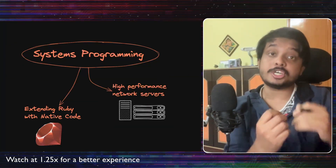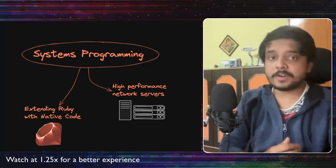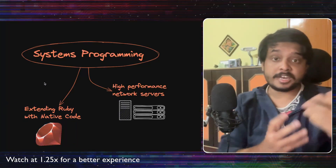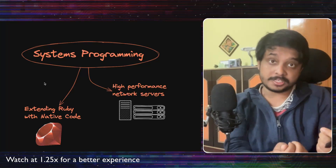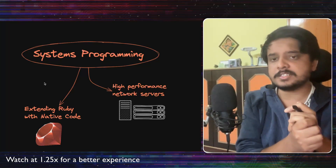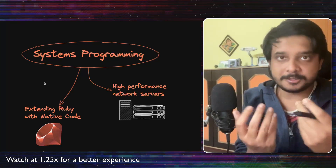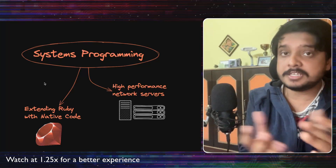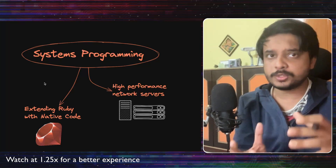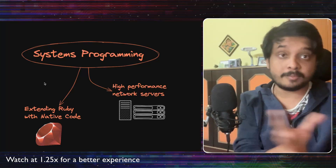The term systems programming generally means much lower level programming with high performance native code. For Shopify, they wanted to make things like network servers and extending Ruby with native code. For these purposes they historically used Go and C, but they are choosing Rust now. It is important to mention that their main backend language is still Ruby, so if they want to create some new backend component or service they would first reach out to Ruby and not Rust. Rust is here only for systems programming.